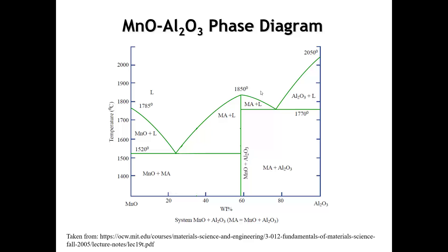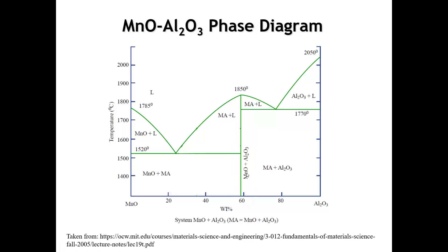Here's one of many examples of such a phase diagram. This is the phase diagram between manganese(II) oxide and aluminum oxide. You can see there's only one ternary composition that forms, MnAl2O4 — that would be a one-to-one ratio of Al2O3 and MnO. Interestingly, on this phase diagram it doesn't really look like it's at 50%, but let's ignore that for a minute.